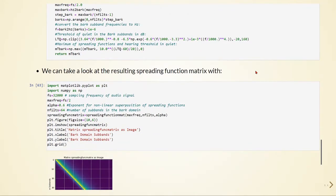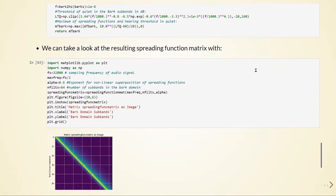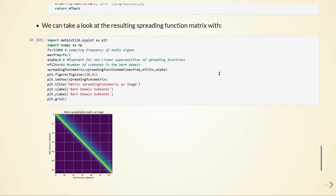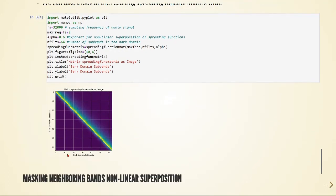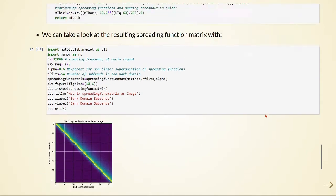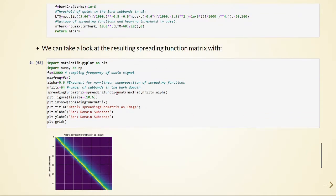We can look at the resulting spreading function matrix if we use alpha equals to 0.6, sampling frequency equals to 32 kilohertz, so the Nyquist frequency will be 16 kilohertz. And here how this spreading function matrix looks like as an image. So far we use just this spreading function math.